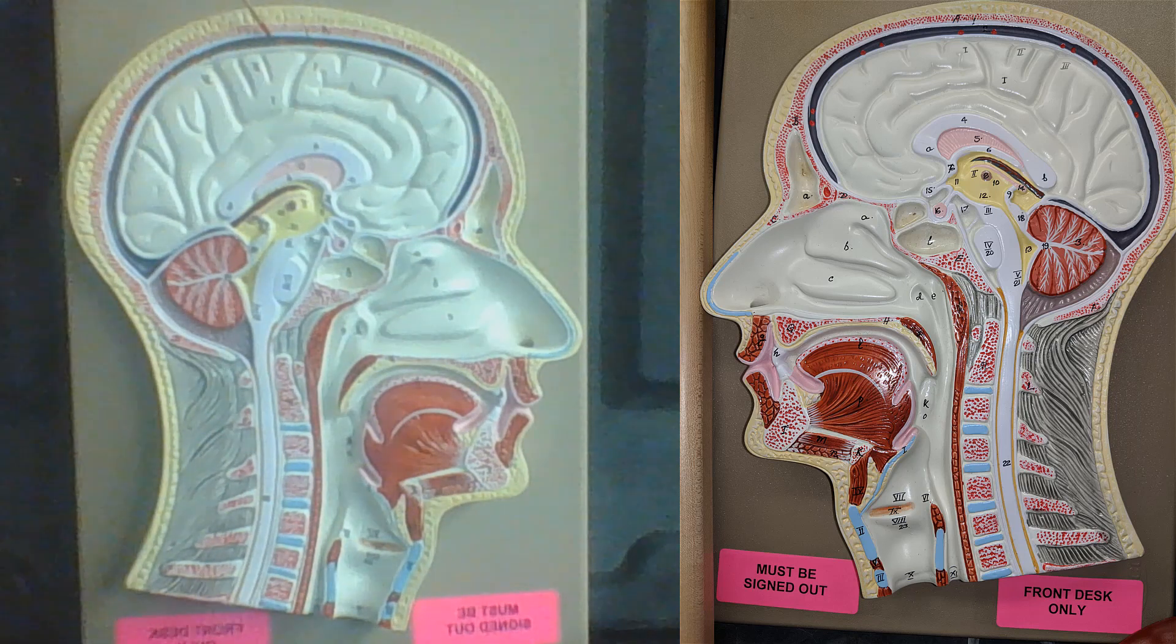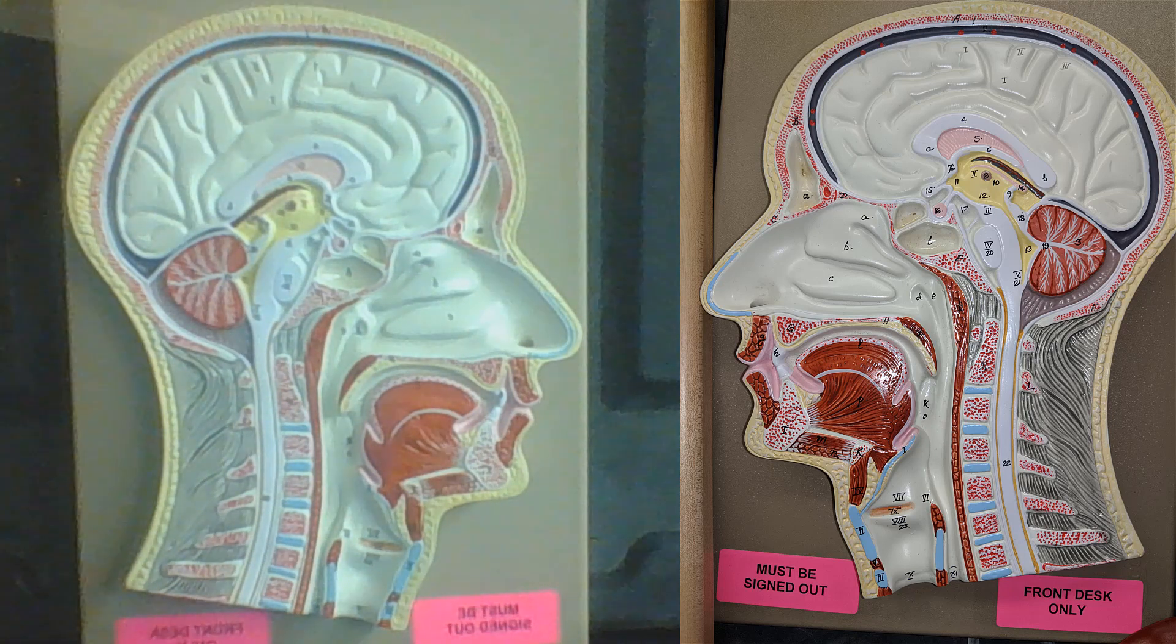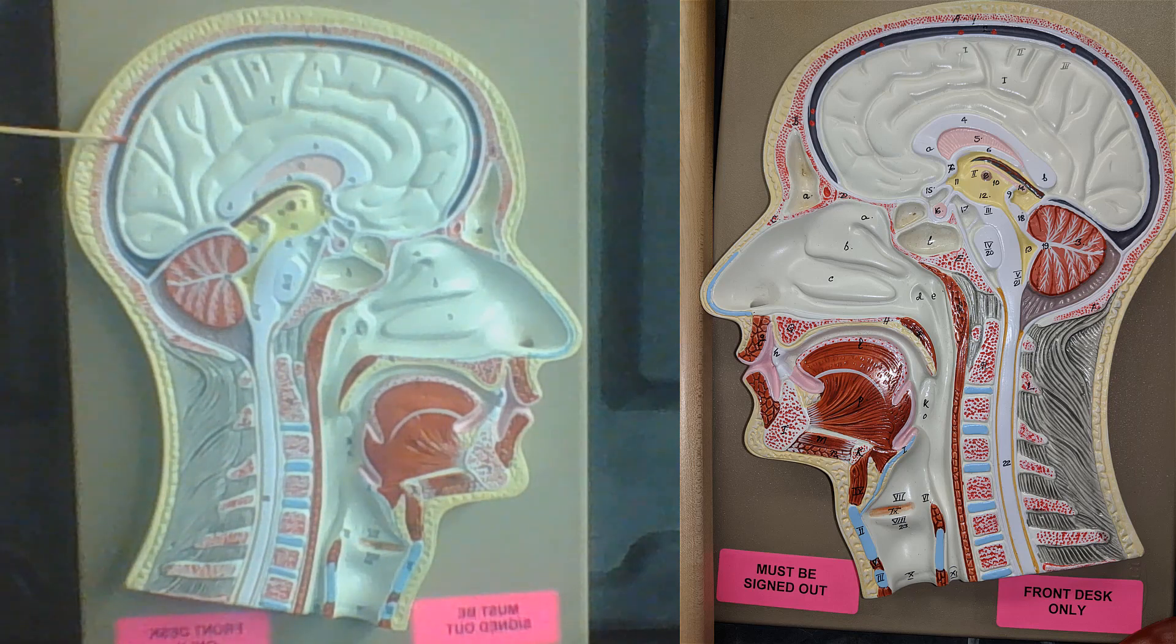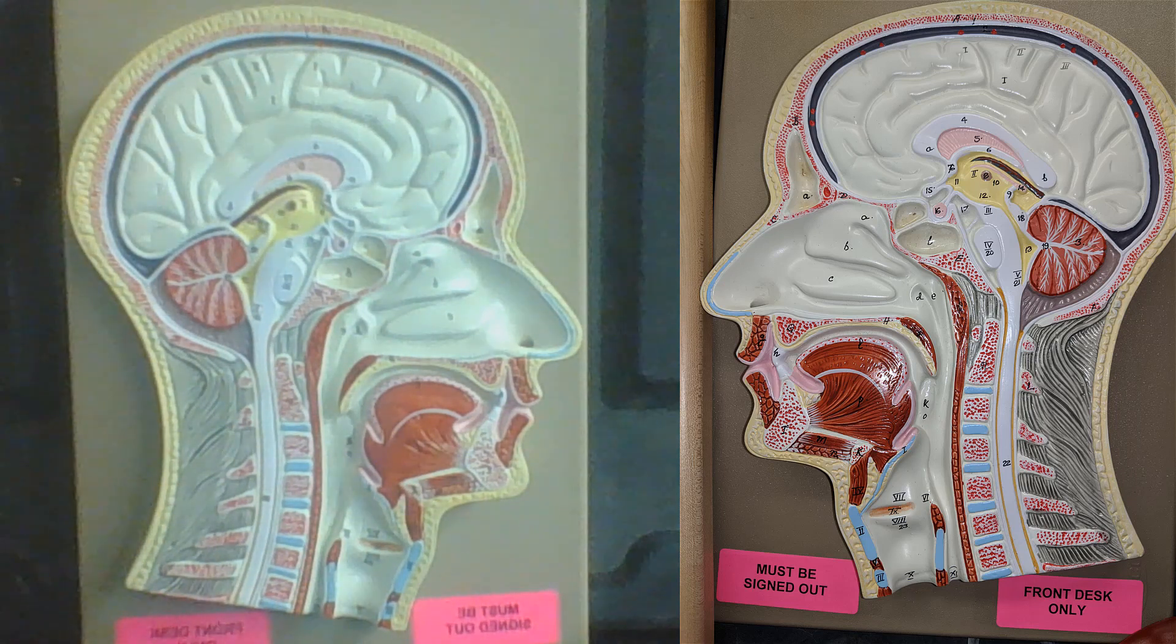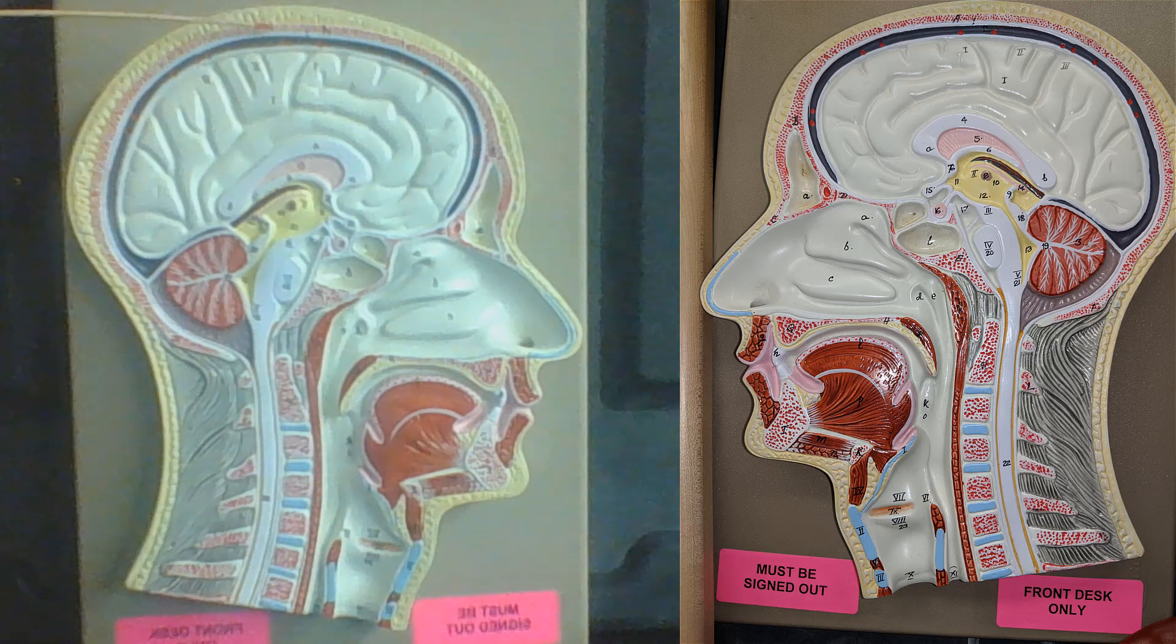The middle meninges is the arachnoid membrane. The arachnoid membrane has a subarachnoid space. And directly around the brain we have the pia mater. And those are the three meninges: the pia mater, the arachnoid membrane, and the dura mater.